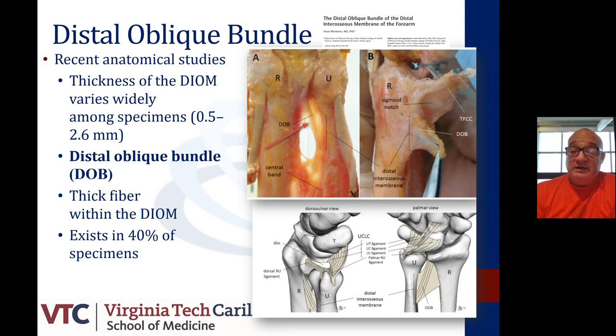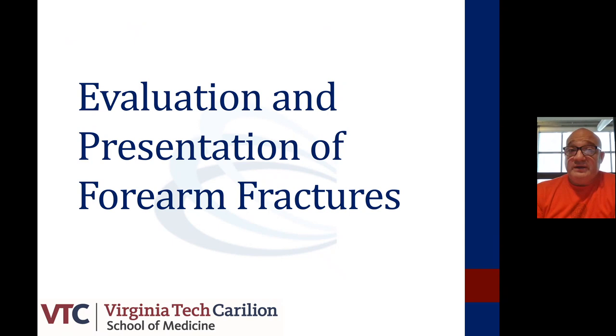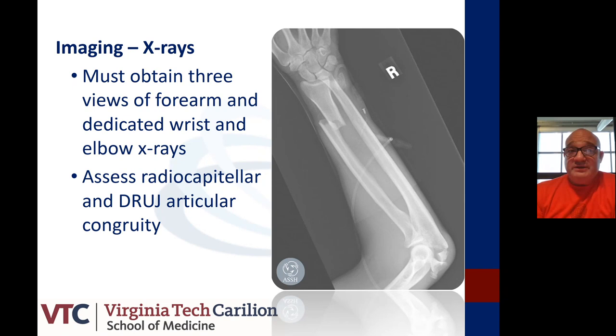The distal oblique bundle also has significance in patients when considering ulnar shortening procedures, either proximally or distally to the distal oblique bundle. As we now know the pertinent anatomy, how do we evaluate and document their presentation? Usually you need to obtain imaging that not only involves the forearm but also the neighboring joints — meaning the wrist and the elbow joint need to be included.